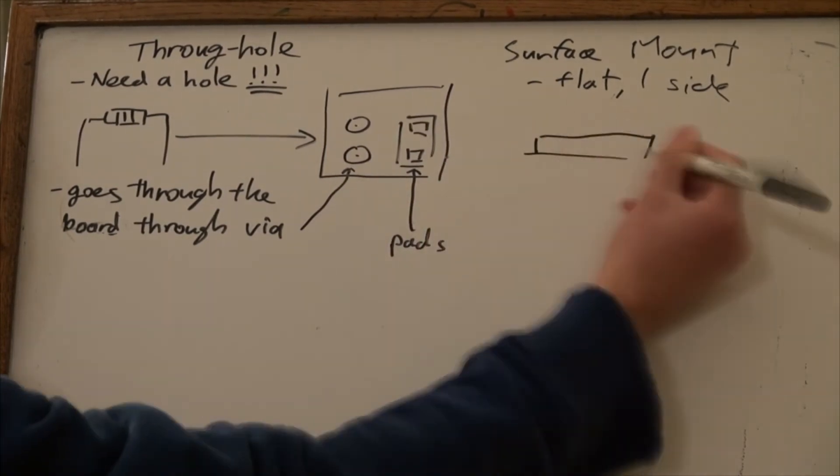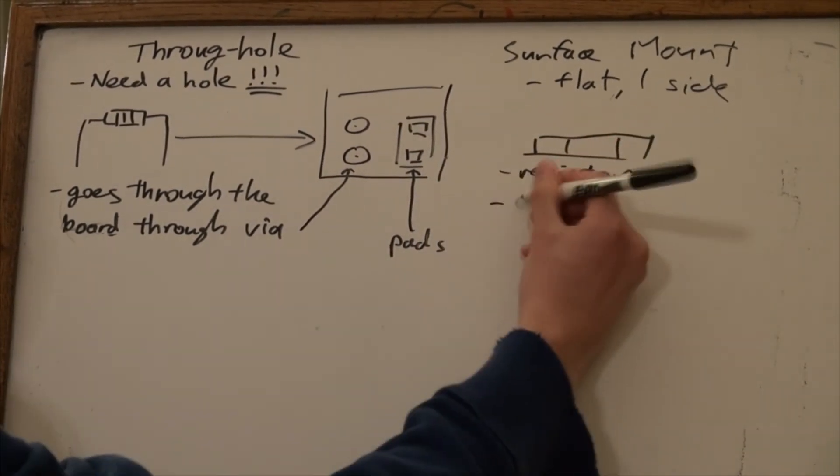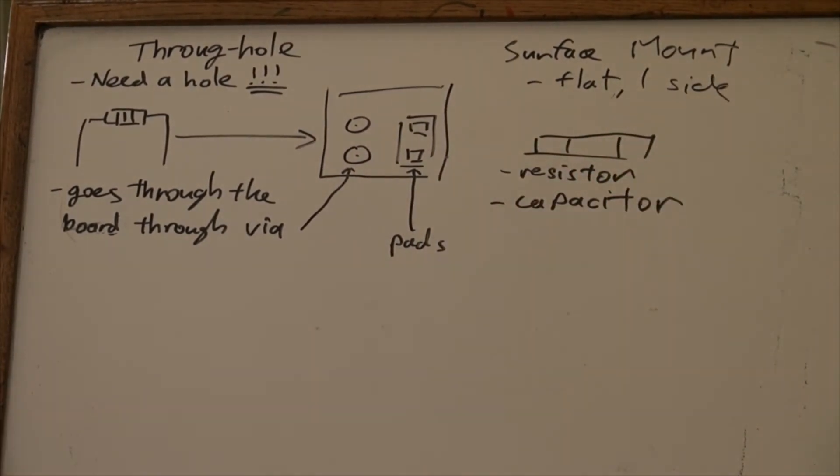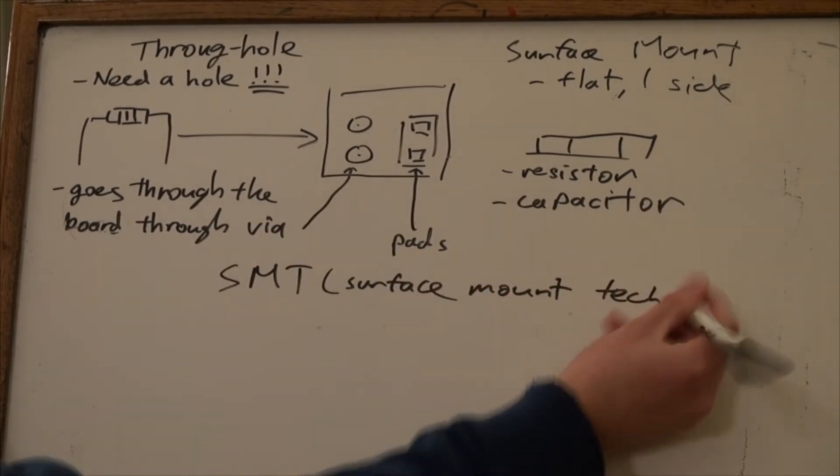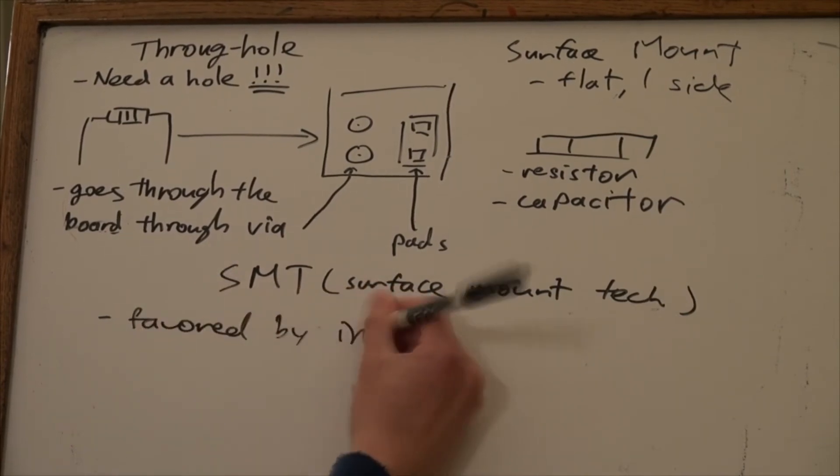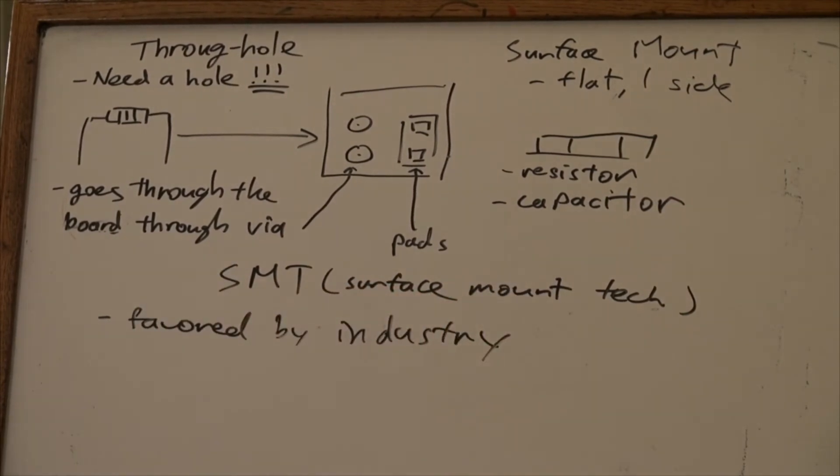Surface-mount designs have taken over the industry and are widely used over through-hole components. Comparing the two components, there are multiple advantages in using surface-mount parts. Since they are much smaller, there can be a higher density of components per area, so the board size can be reduced.